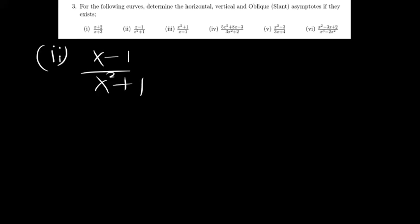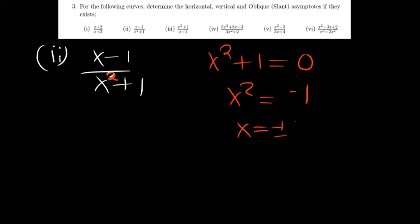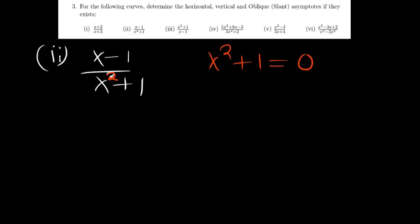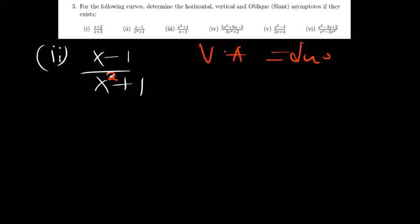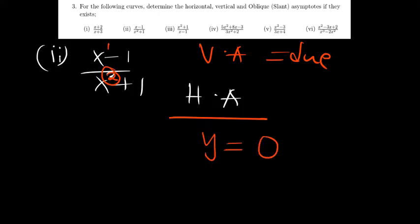For the second one: x minus 1 over x squared plus 1. This is a proper fraction. Equate the denominator to 0 to find the vertical asymptote: x squared equals negative 1. You notice that you can't find the square root of a negative number, so the vertical asymptote does not exist — there is no case where the denominator can equal 0 because of the power 2. For the horizontal asymptote, the denominator has a greater degree (power 2 vs. power 1), so y is equal to 0 is the horizontal asymptote.